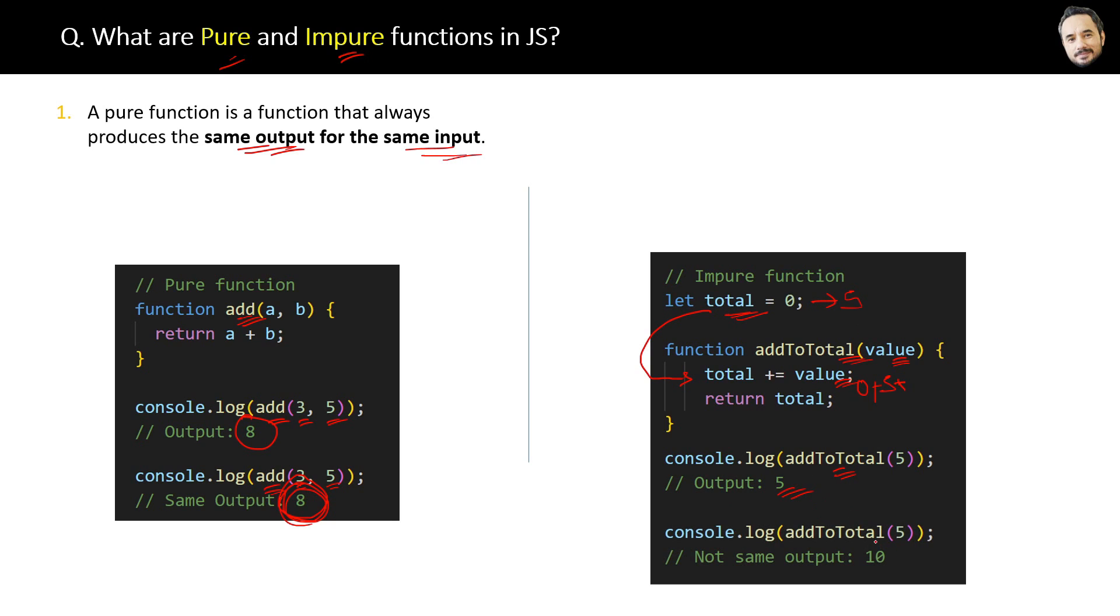If we call the same function again with the same parameter 5, this time the output will not be the same. The parameter value is the same as 5, you can see. But because total is a global scope variable, it has maintained its last state, and its value is 5 from the past action.